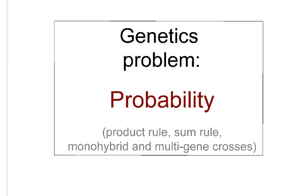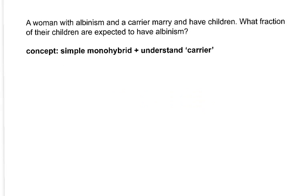This is genetics, and today's problem is probability. We're going to talk about the product rule, the sum rule, and how to use these in the context of monohybrid and multi-gene crosses.